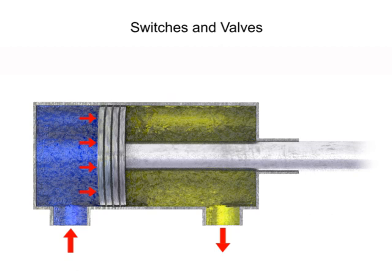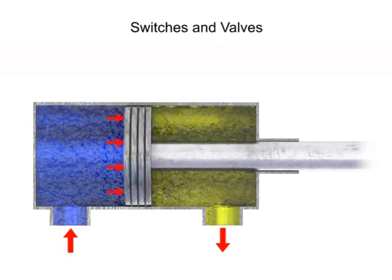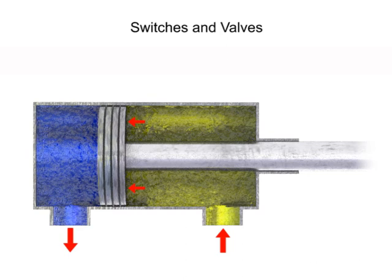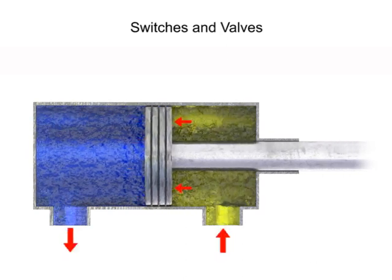A cylinder is said to reciprocate if its piston travels back and forth, being reversed automatically at each end of its stroke without human operator attention.